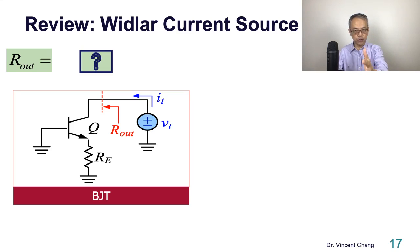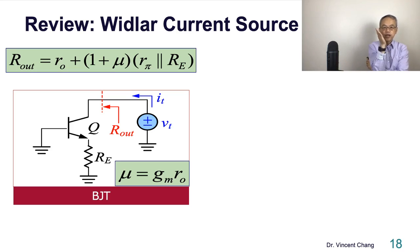Allow me to assume before you move forward, you already watched this lecture video related to Widlar current source. When I taught Widlar current source, you have this. You already learned this. So what's the answer? The answer is you can use R_pi in parallel with R_E. R_pi, resistance between emitter base looking into base, in parallel with R_E, and multiply by 1 plus mu. And then add the r_O. And mu is defined as transconductance times output resistance.